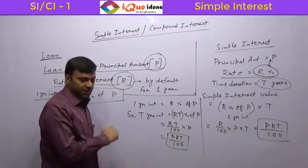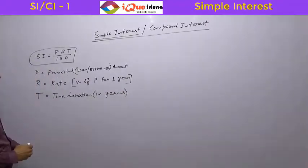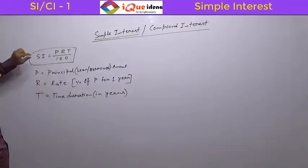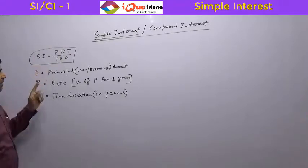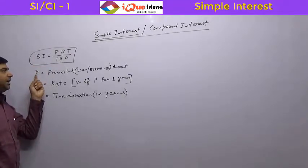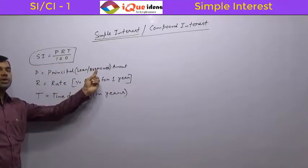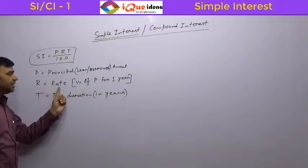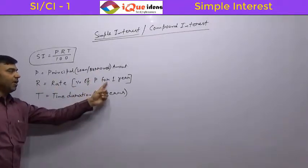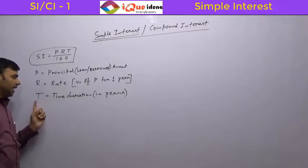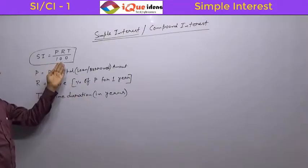So the simple formula for simple interest is PRT upon 100. The formula is P × R × T divided by 100, where P is the principal amount — the loan or borrowed amount — R is the rate as a percentage of principal for one year, and T is the time duration.